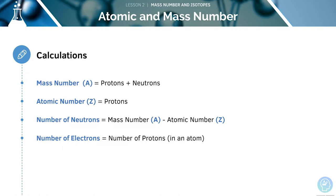We can also work out the number of electrons in an atom, since they will be equal to the number of protons. Electrons are negatively charged and protons are positively charged. In an atom, these must be equal since the overall charge of the element will be zero, or uncharged.